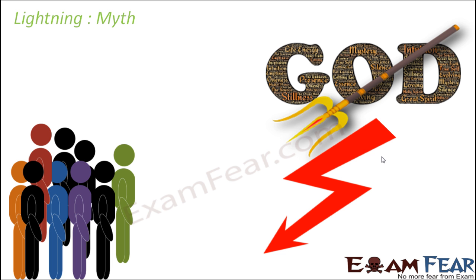Lightning was considered kind of a god's weapon in ancient days. But later, with scientific developments, people got to know the real cause behind lightning. They found that lightning is nothing but a phenomenon that happens due to electric discharge, and this electric discharge concept is based on the concept of electric charges. When this concept became known, people understood that all those stories were nothing but a myth.